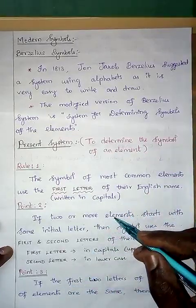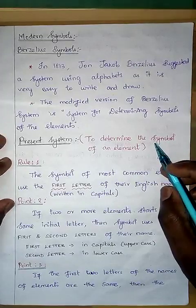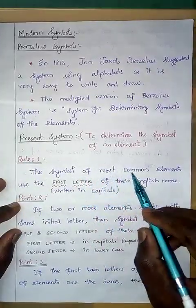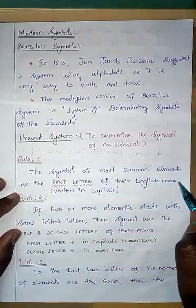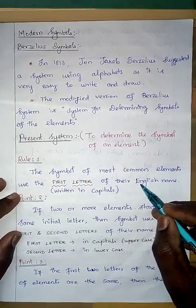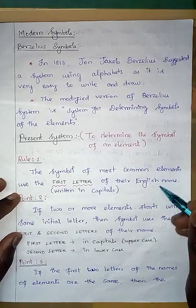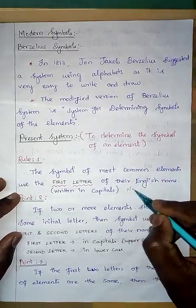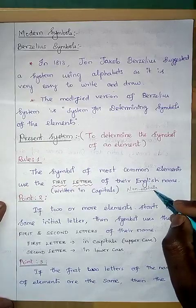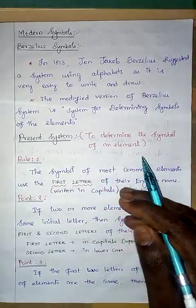Let us start with point number one. In the present system, the symbol of most common elements uses the first letter of their English name. We can confirm that most of the symbols of elements are derived from English names, especially non-metals. We will see the meaning of this a little later. Now we will see examples from the modern periodic table.